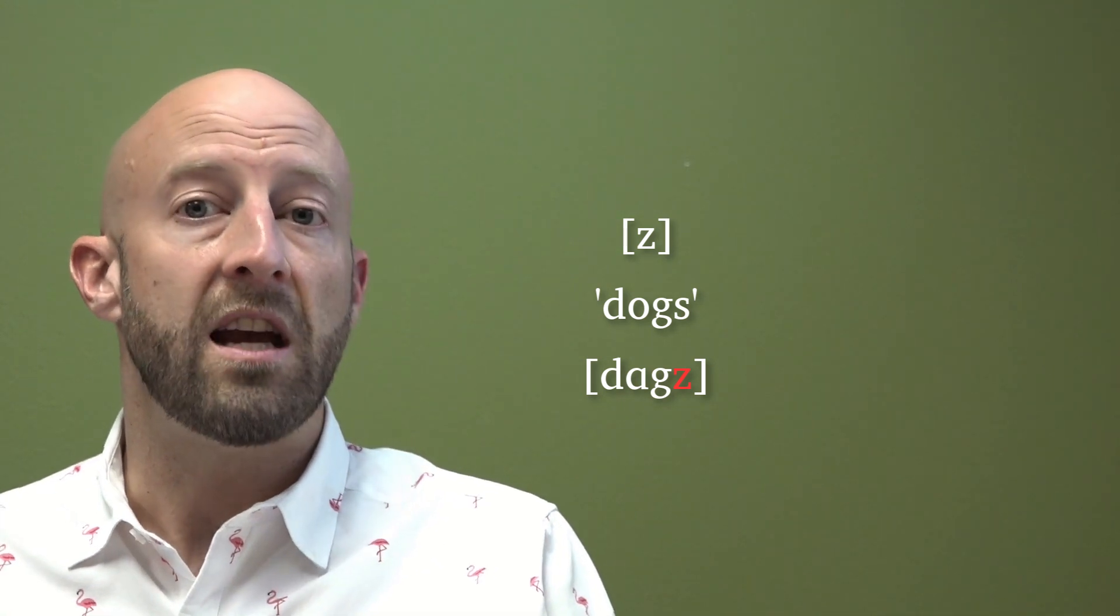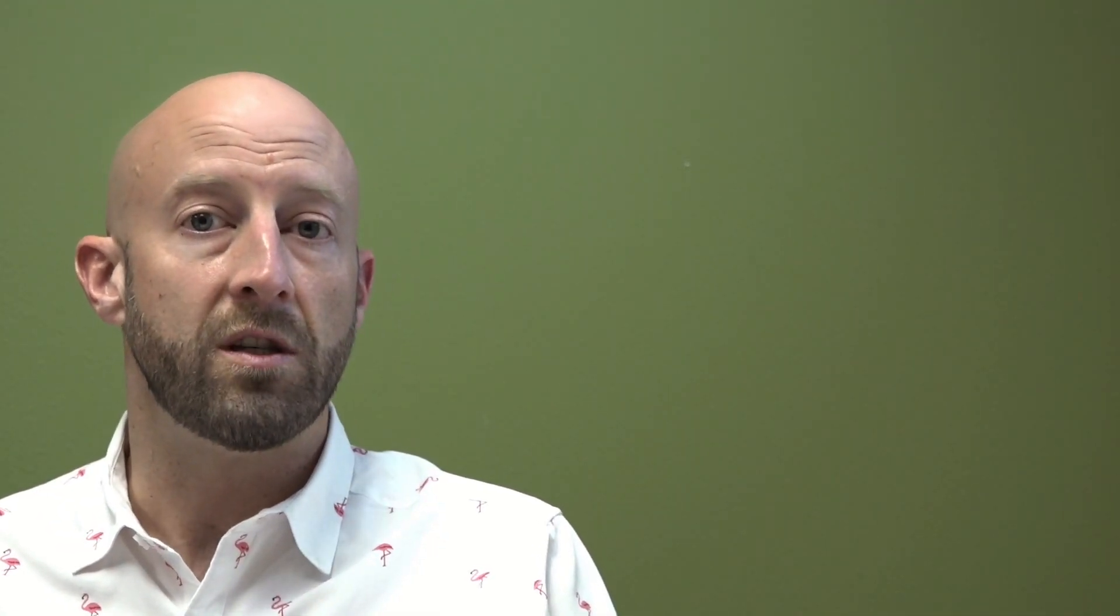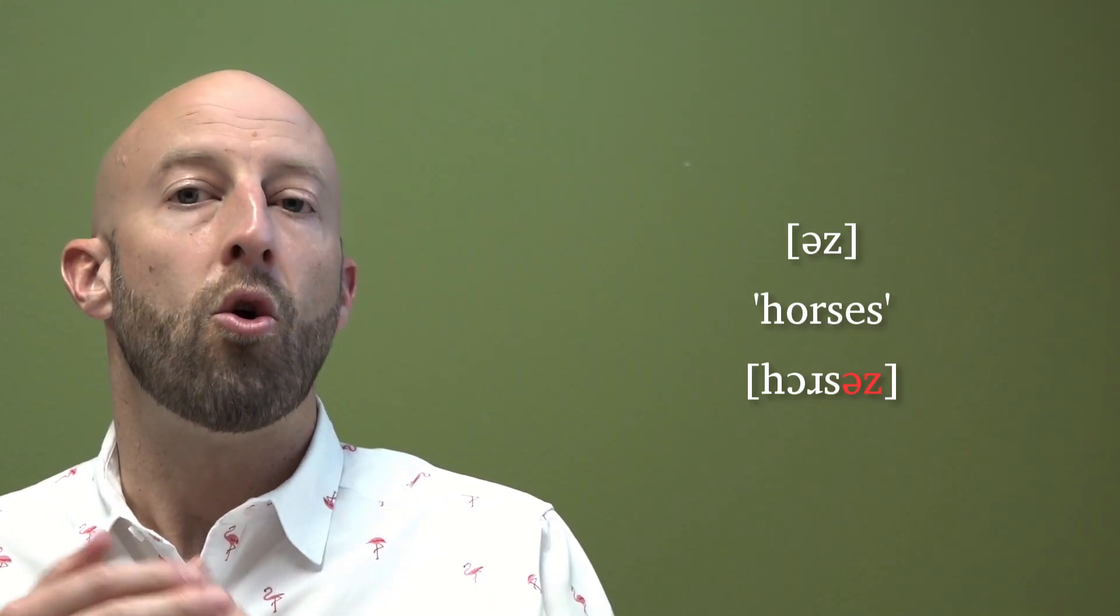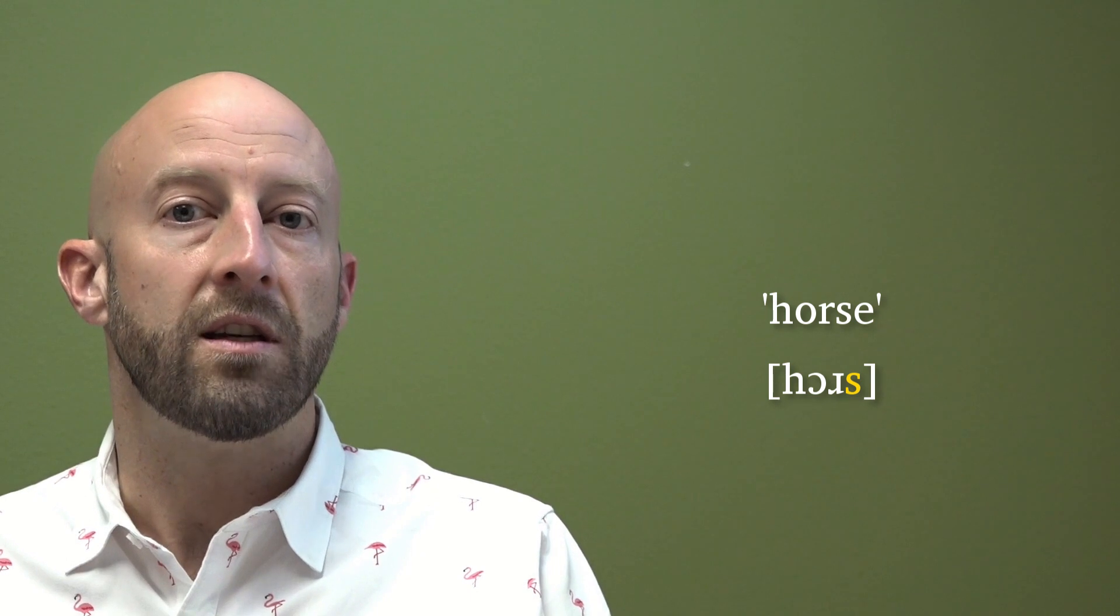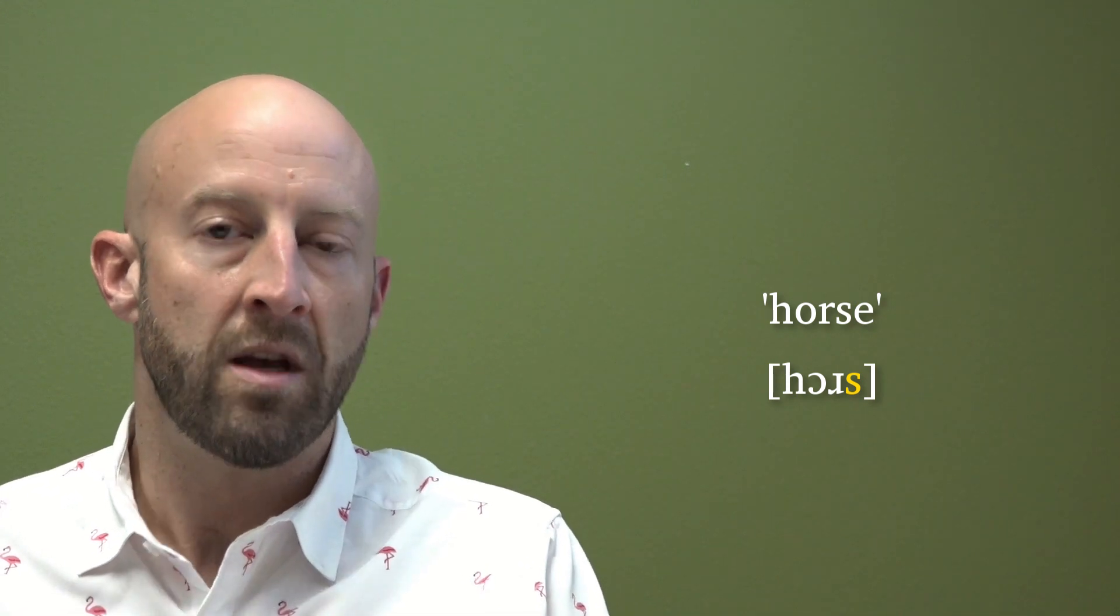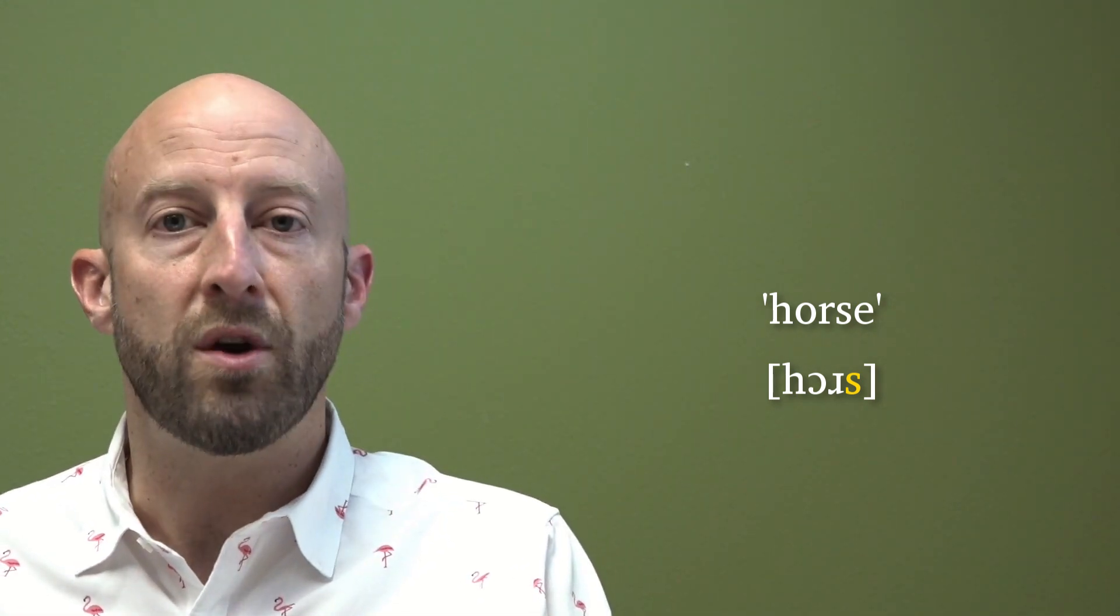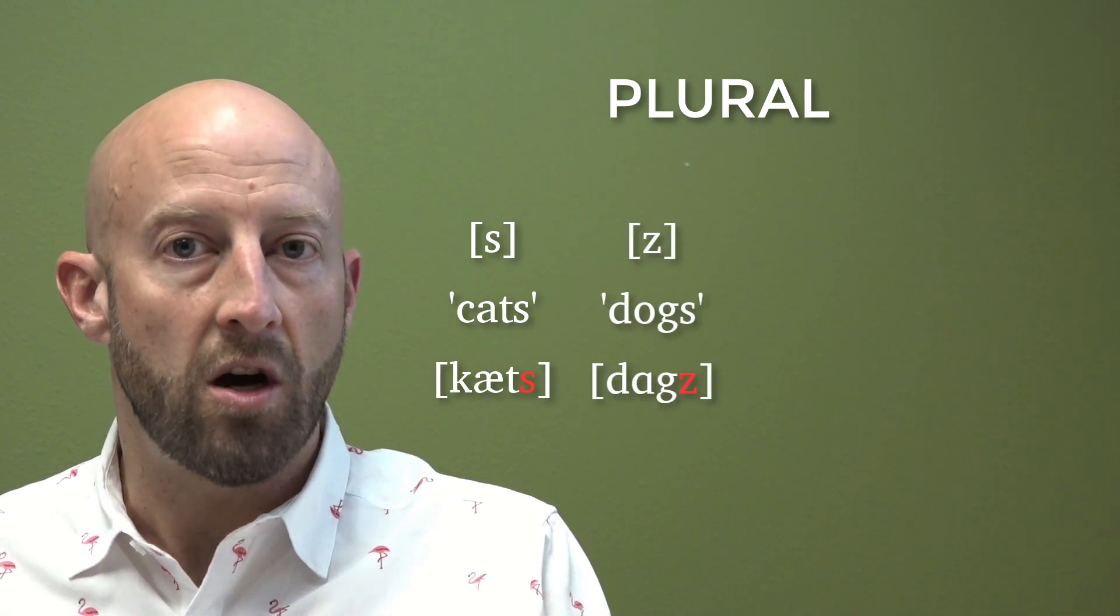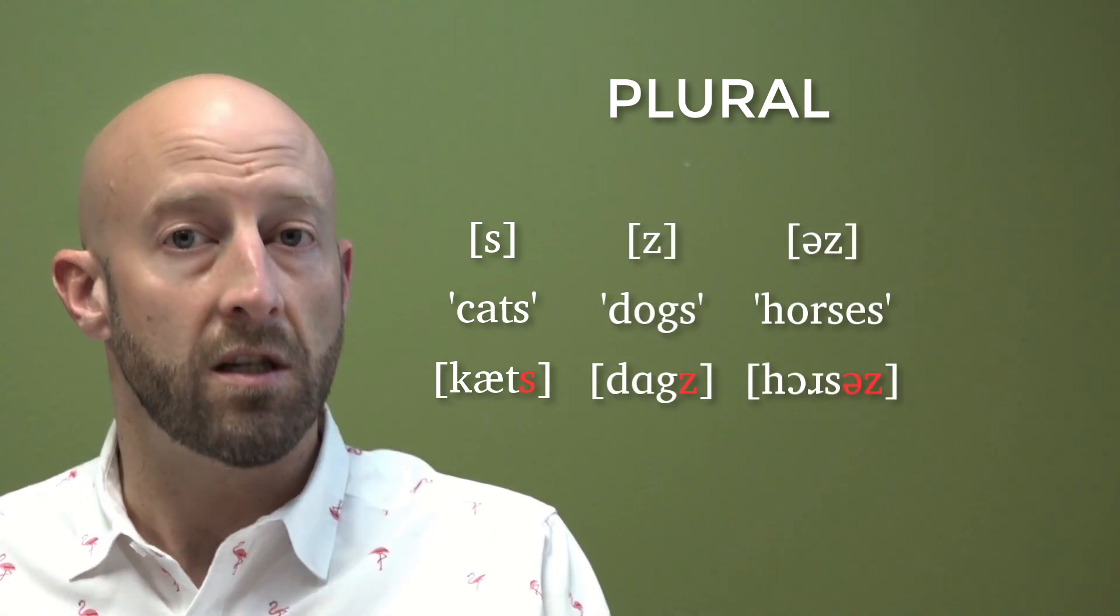And we can take another, a third allomorph for the plural marker, which is /əz/, like in a word such as horses. So because horse ends in the sound /s/, we have to rely on this third strategy here of inserting a vowel and then providing a z. So people don't say, hey, look at those pretty horses. Right? Nobody says that. So you have to say horses. So we've got /s/ like in cats, /z/ as in dogs, and /əz/ as in horses.